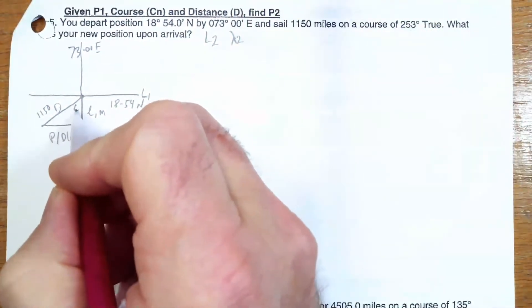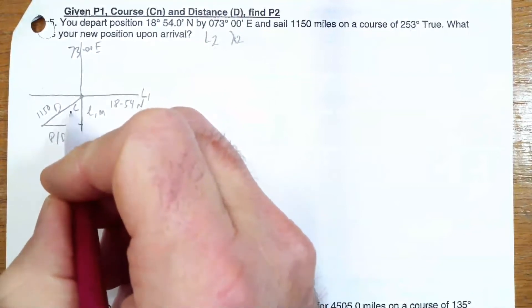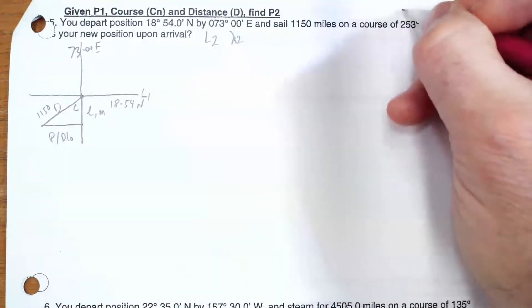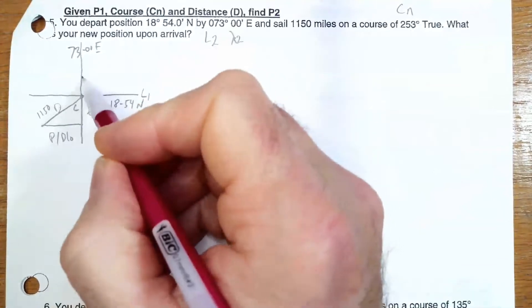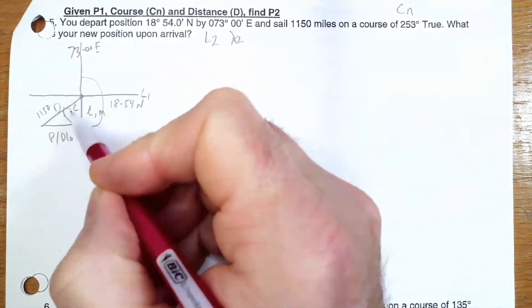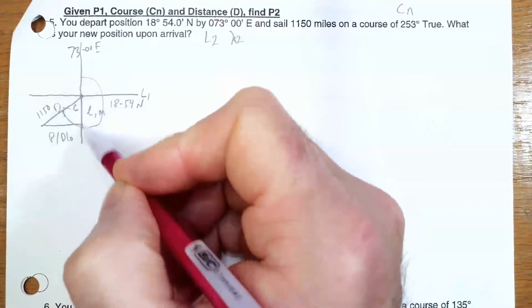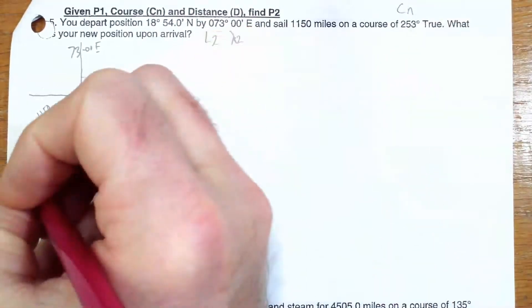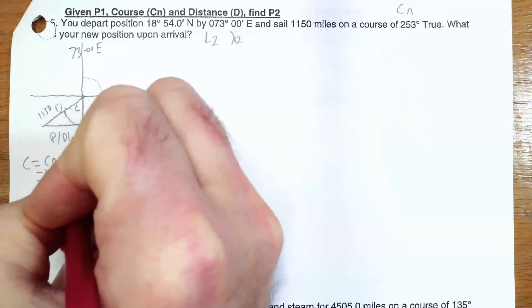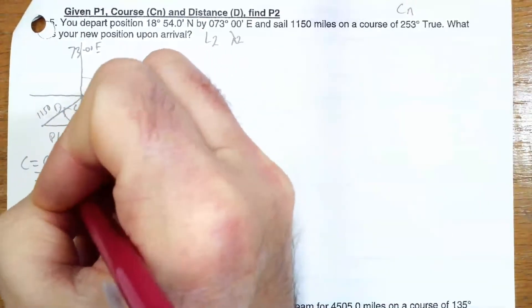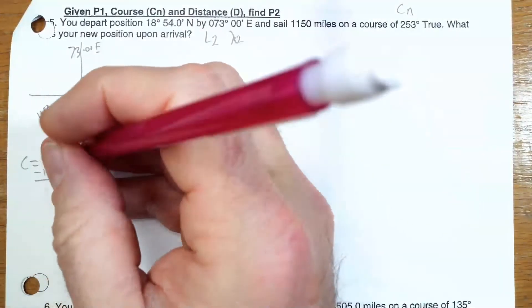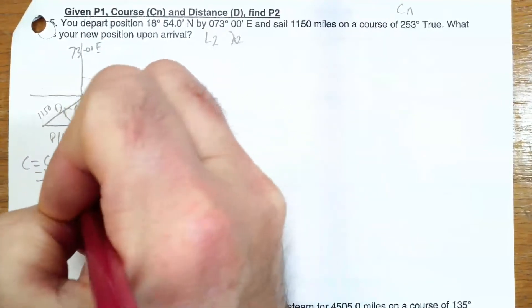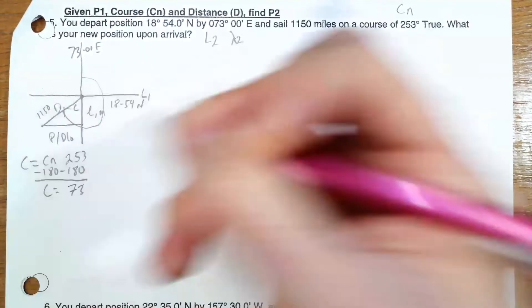That angle C is what I need to do my computations. They gave me CN — course from north — which is 253. What I want is the little course angle C. So I'm going to take 253 and subtract 180, and that gives me C. C equals CN minus 180, which is 253 minus 180, and that is 73. So my C is 73 degrees.